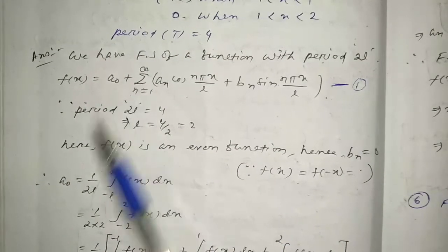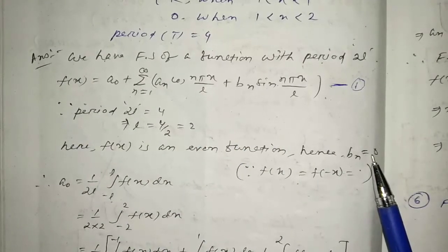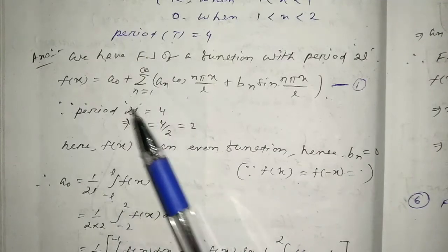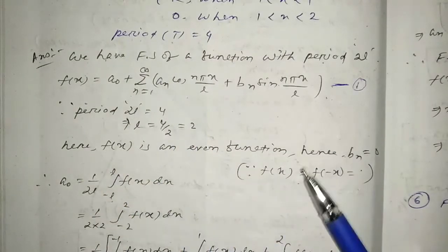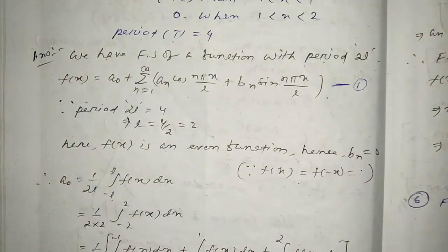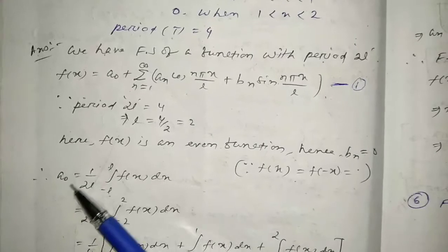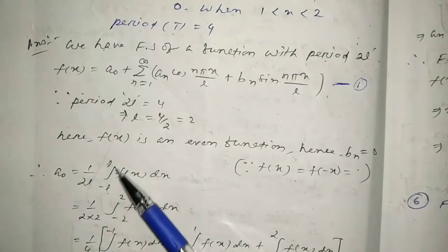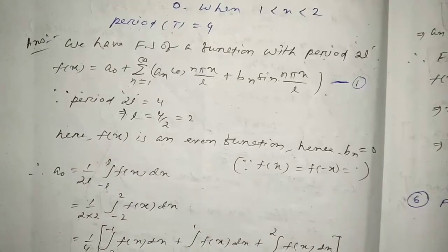Now, a0 equals (1/2L) times the integral from -L to L of f(x) dx. Substituting L = 2, this becomes a0 = (1/4) times the integral from -2 to 2 of f(x) dx. The limit changes from -l to l, becoming -2 to 2.